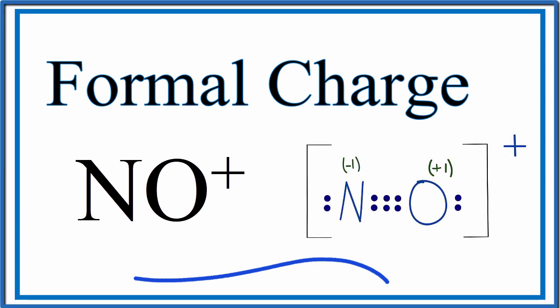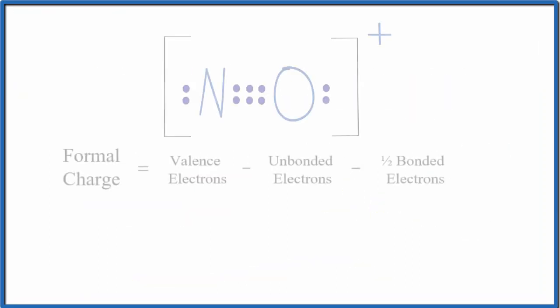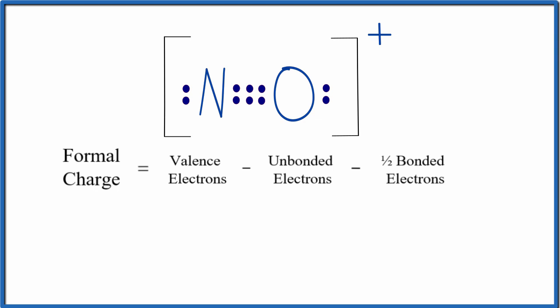To calculate the formal charges for NO+, we'll start with the Lewis structure. So this is the correct Lewis structure for NO+, and we're going to find the formal charges on each atom in the NO-plus molecule.